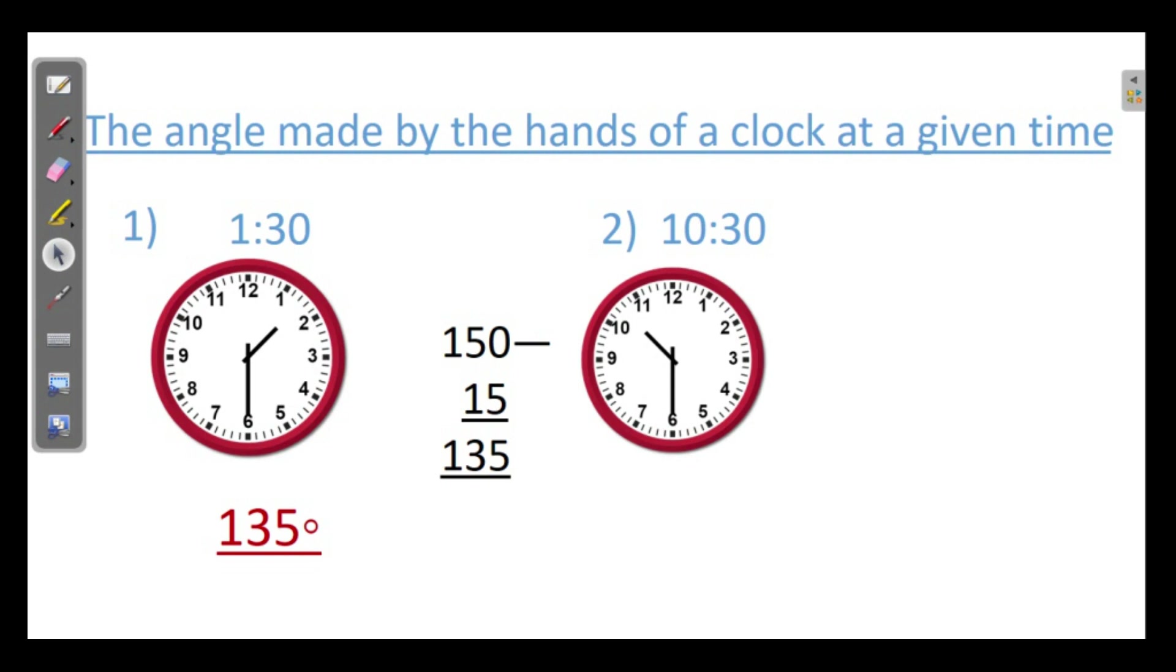Yes, the next one is 10:30. The face is like this. And here the hour hand is leading. That is we are to count from 10. There the hour hand is leading: 30, 60, 90, 120. And this we have encountered, so we have to add this half of 30 to that, that is 15 degrees. 120 plus 15 equals 135 degrees.